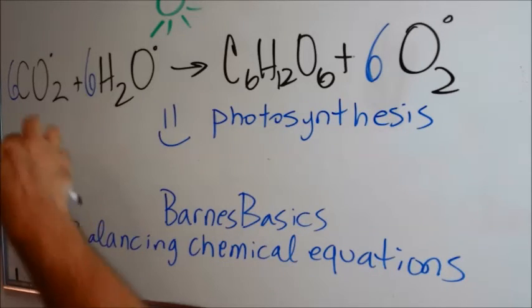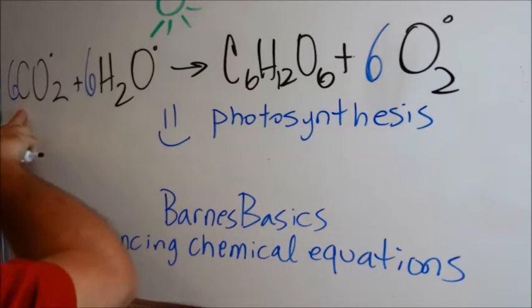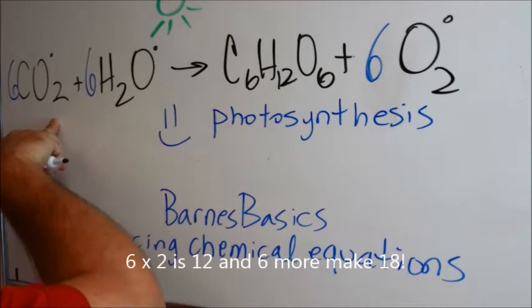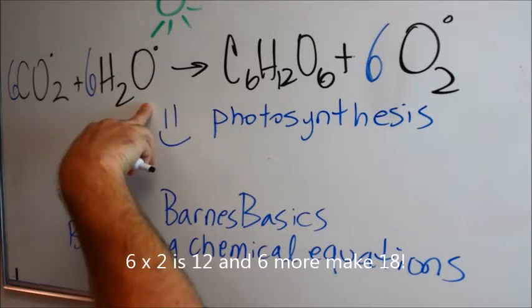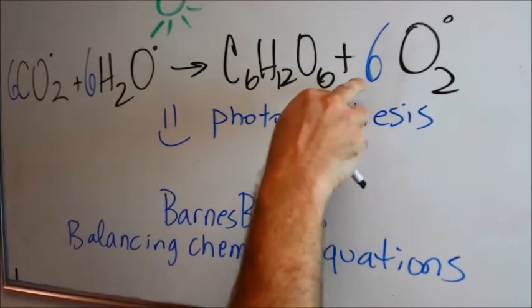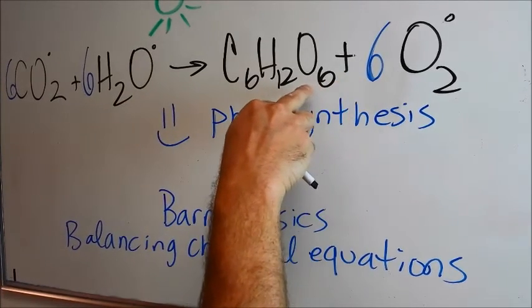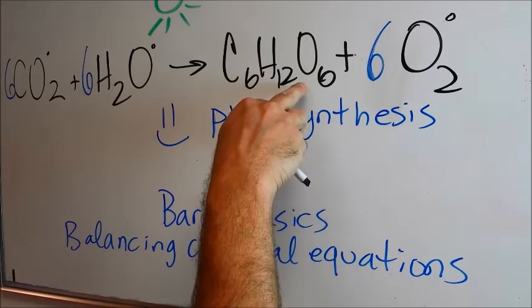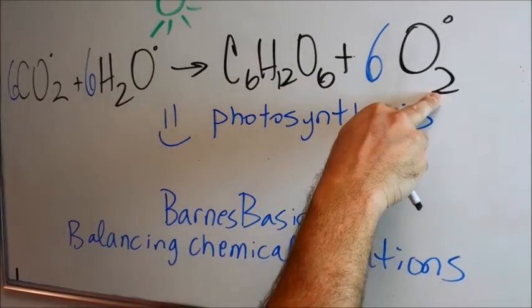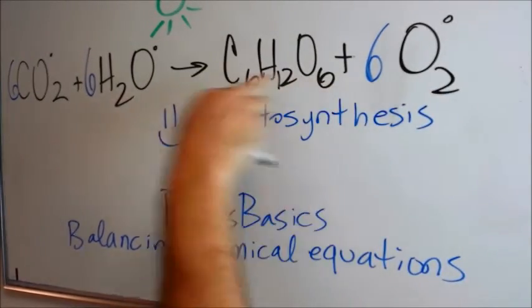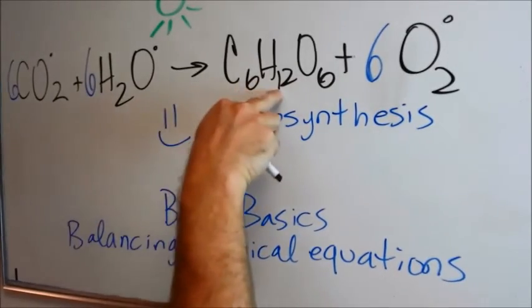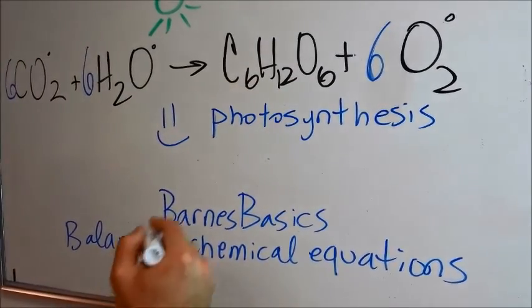So let's balance one more time. 6 carbons, 6 carbons. 6 times 2 is 12, 8 more makes 18. Let's look at oxygens again: 6 here, 6 times 2 is 12, that's 18. 6 times 2 is 12. Hydrogens — we have 12 hydrogens. We're good to go.